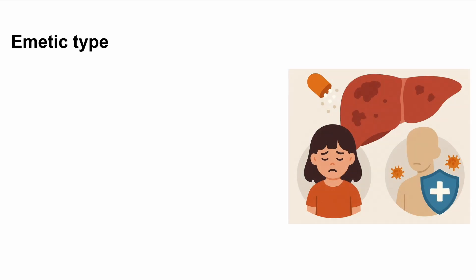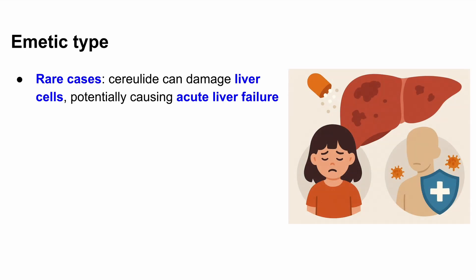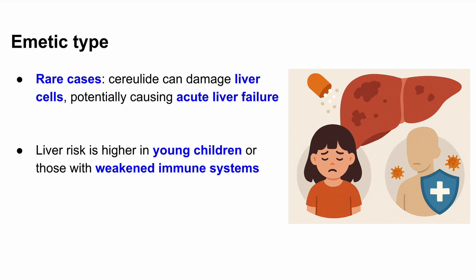Here's something less commonly known: cerelide toxin can affect your liver. In very rare cases, it has been linked to acute liver failure, especially in young children or people with weakened immune systems. This happens because the toxin interferes with the mitochondria in liver cells, causing cell injury. Remember, mitochondria are the powerhouse of the cell — if they're not working, nothing else will. So that's the emetic type: rapid onset nausea and vomiting due to preformed cerelide toxin, usually from reheated rice.